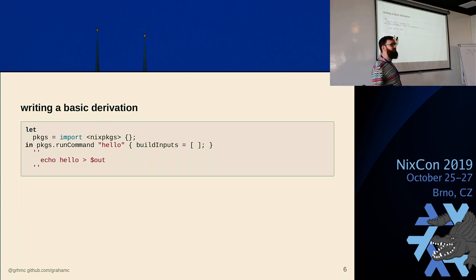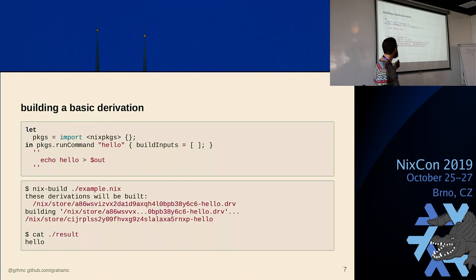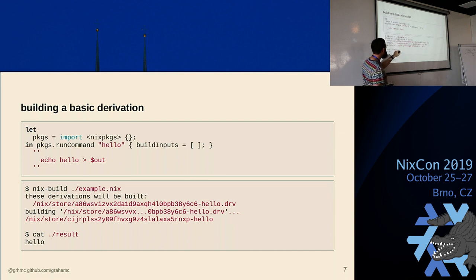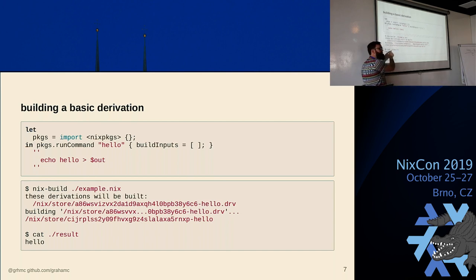So what's going to happen when we run nix build on this? We do nix build on that example. It says we're going to build this hello derivation — there's the name and the big hash. It builds it and produces this output path, hello. It creates this result symlink whose contents is hello.